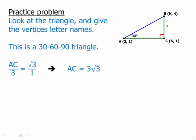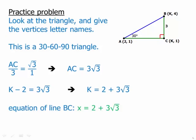And so this AC, which is 3√3, this equals k - 2, as we've said. So now all we have to do is add 2 to solve for k. And we get k = 2 + 3√3. And therefore the equation of the line is x = 2 + 3√3.